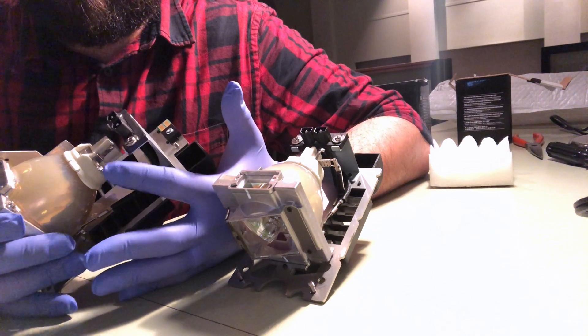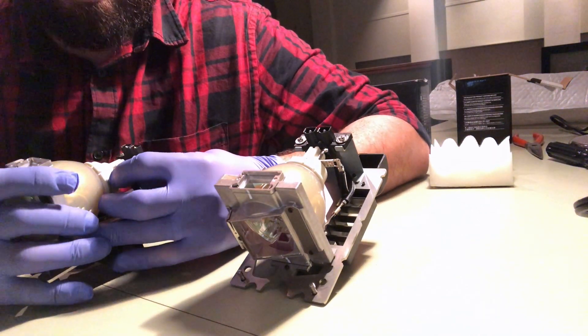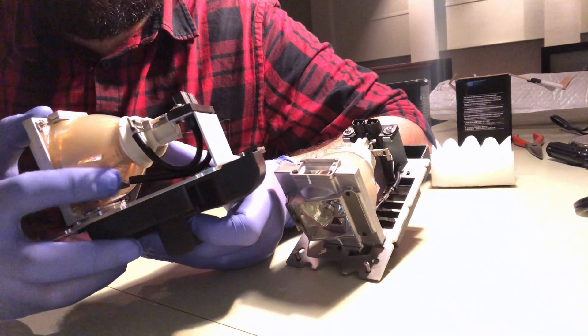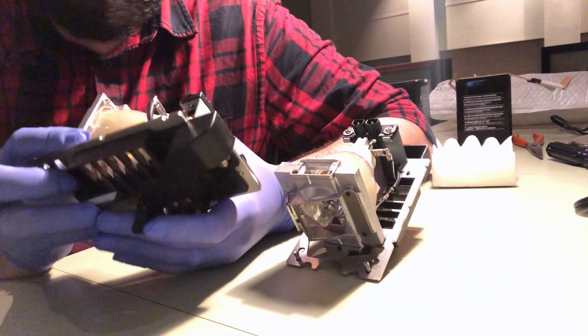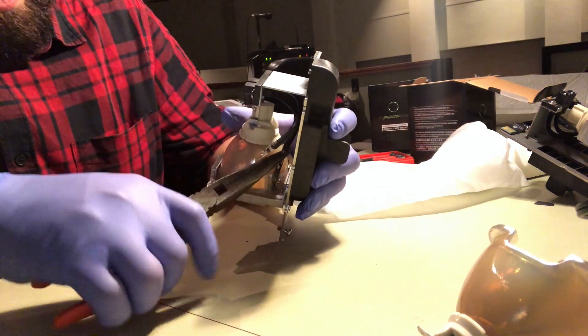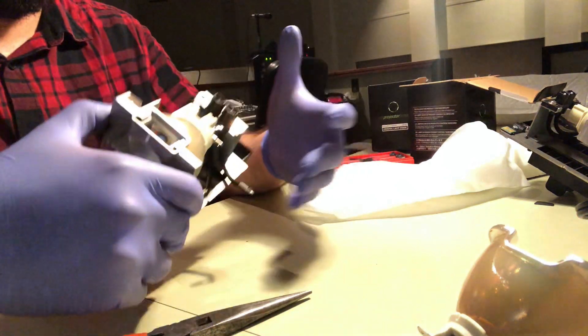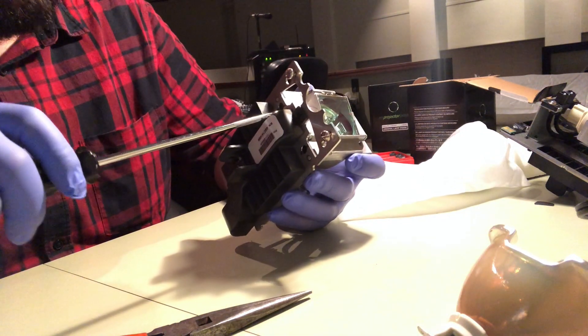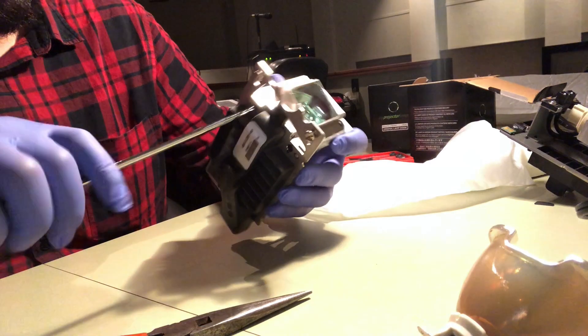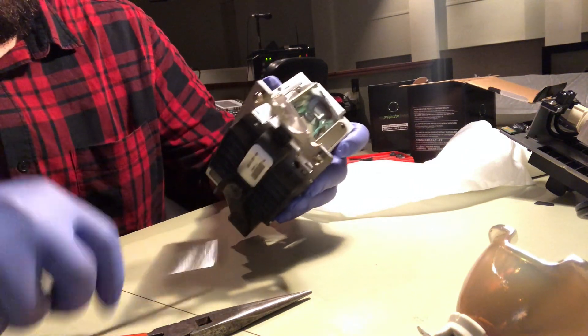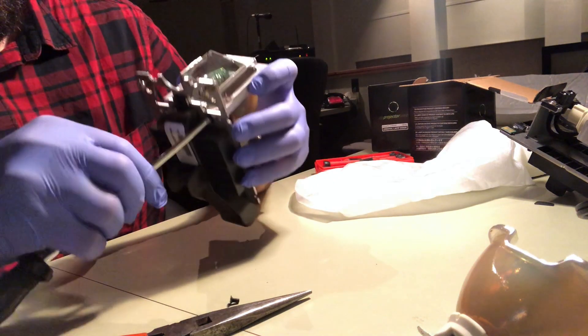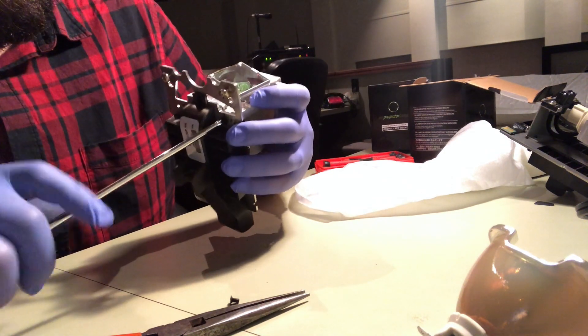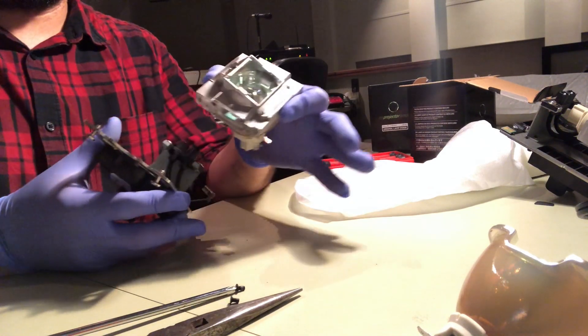So first thing we're going to do is disconnect this side connector here. This is what actually fires the lamp. And then I'm going to disconnect this lower connector here on the lower side of the bulb. Just walk it out. Same thing on this side. Pop it out. On the bottom we're going to take these two black screws that are marked out. It's going to release our bulb from the housing. Bulb comes off the housing.